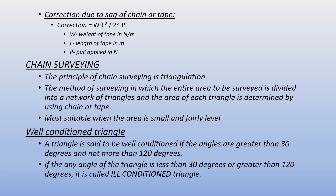Such a triangle is known as a well-conditioned triangle. If the angles are less than 30 degrees or greater than 120 degrees, such a triangle is known as an ill-conditioned triangle.